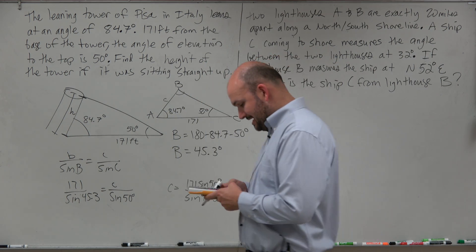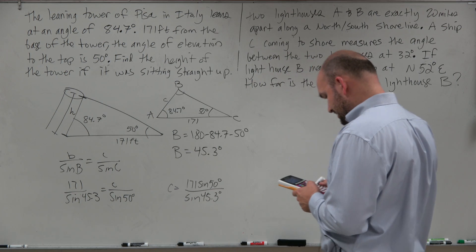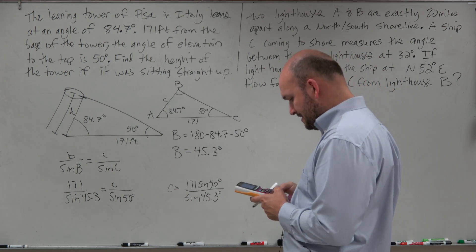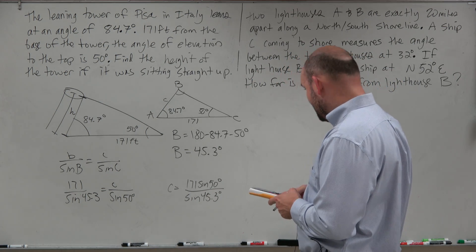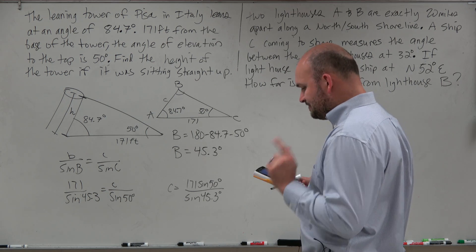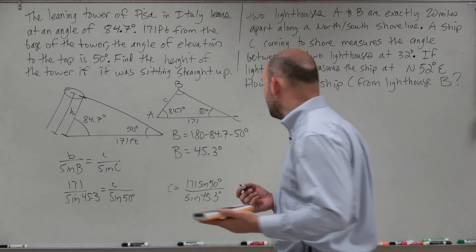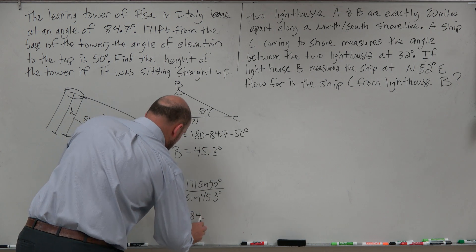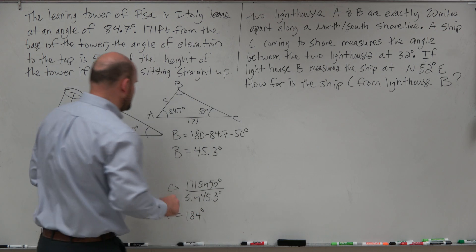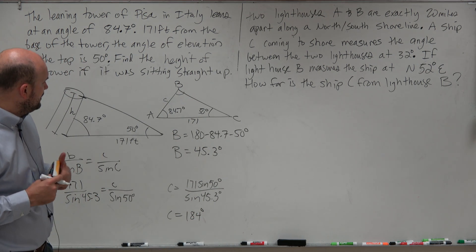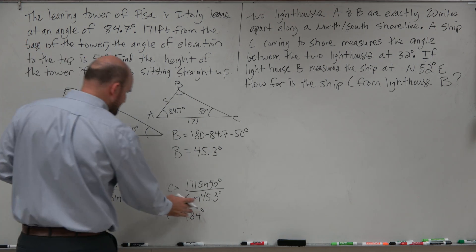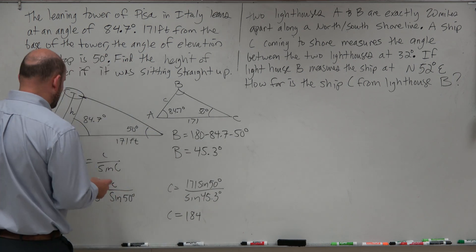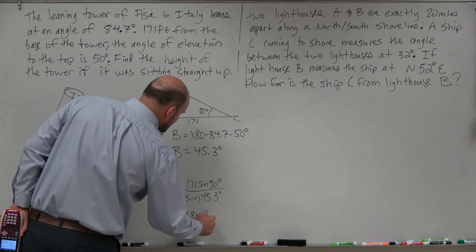And in this example, I'm just going to do 171 times the sine of 50, and then divide that by the sine of 45.3. Just make sure your calculator is in degree mode when you're doing these problems. So we'll have C equals 184 point, actually, I'm just going to round this to the nearest degree, so that's just going to be 184, not degrees. The degree is actually divided out, so that's going to be 184 feet.